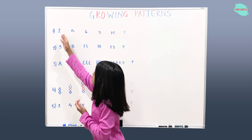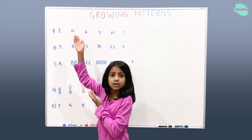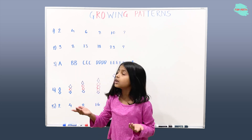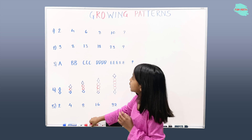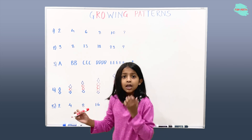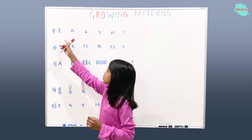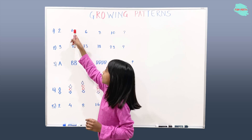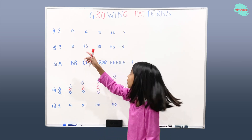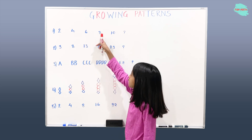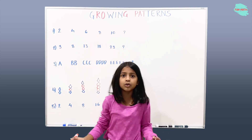So two plus a number equals four. So it's two plus two equals four. Let's see if that is correct. Two plus two equals four. Four plus two equals six. Six plus two equals eight. Eight plus two equals ten. That means the rule is correct.